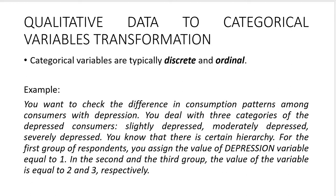As discussed in the previous video, categorical variables are typically discrete and ordinal. Consider this example: imagine you want to check patterns in consumer purchasing behavior among people with different types of depression. You can distinguish three types — slightly depressed, moderately depressed, or severely depressed. Even though you cannot say being severely depressed is three times worse than being slightly depressed, you can say it is worse, so there is a certain hierarchy — and whenever there is a hierarchy, you can apply categorical variables.